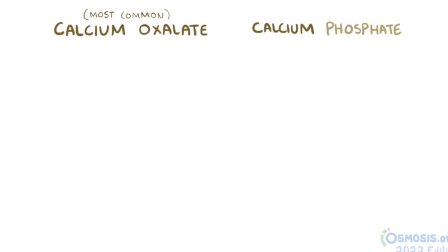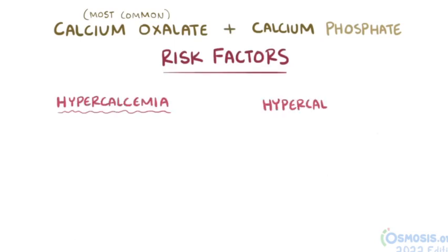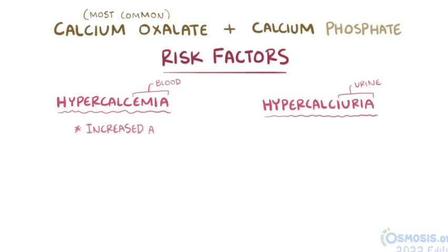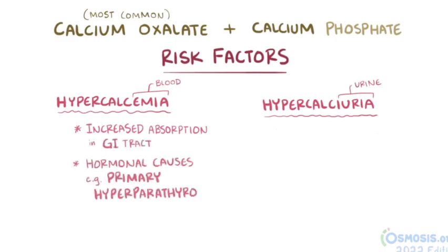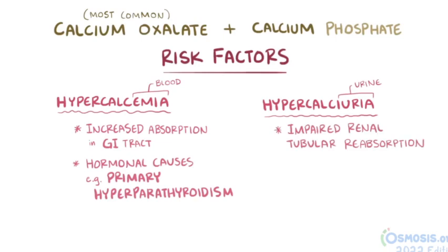The exact reason why these stones form is usually unknown, but there are some known risk factors like hypercalcemia and hypercalciuria — having too much calcium in the blood and urine, respectively. Hypercalcemia can result from increased calcium absorption in the gastrointestinal tract, as well as hormonal causes like primary hyperparathyroidism. Hypercalciuria can result from impaired renal tubular reabsorption of calcium, which leaves a lot of calcium behind in the tubule.